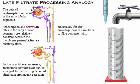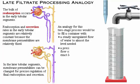An analogy for this two-stage process would be to use a steady but unregulated flow to fill a container to almost the level needed — that's early filtrate processing. Then use a precisely regulated flow of water to top off to the exact level — that's late filtrate processing.